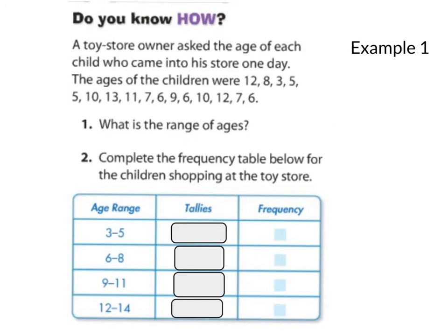Here's our example 1. I'm going to read this. A toy store owner asked the age of each child who came into his store one day. The ages of the children were, and then here are the ages. We're not going to write this. But what is the range of the ages? I noticed that the person that was oldest is 13. And I'm looking for the youngest. And that's 5. So, the range would be 13 minus 5, which is 8.